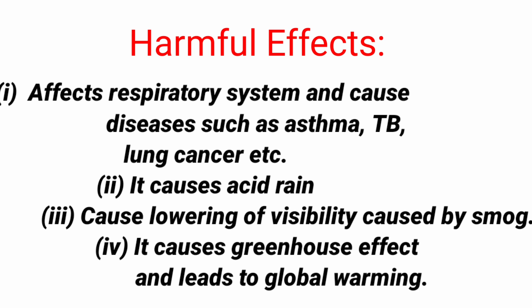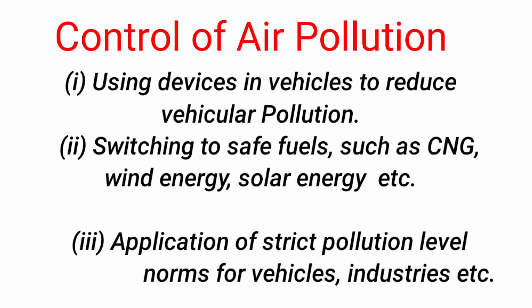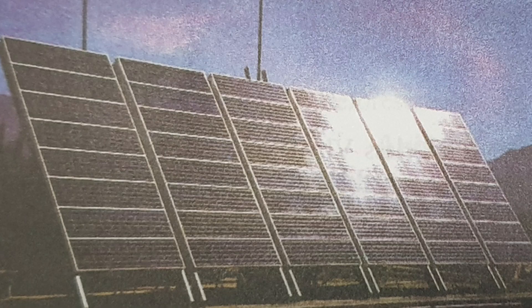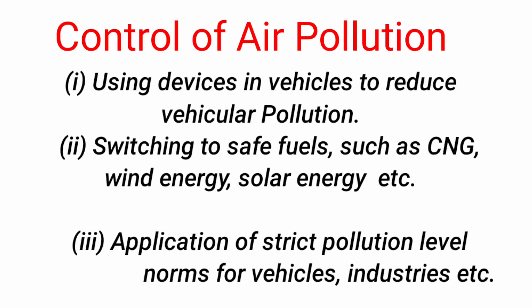We can control air pollution by using devices in vehicles to reduce vehicular pollution, switching to safe fuels such as CNG, wind energy, and solar energy, and by applying strict pollution level norms for vehicles, industries, etc.